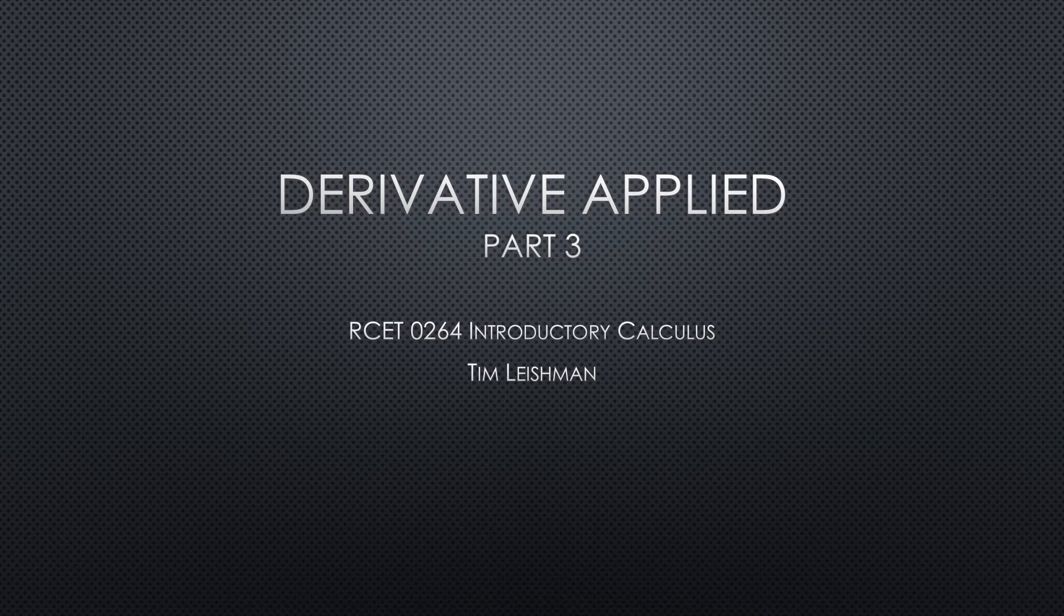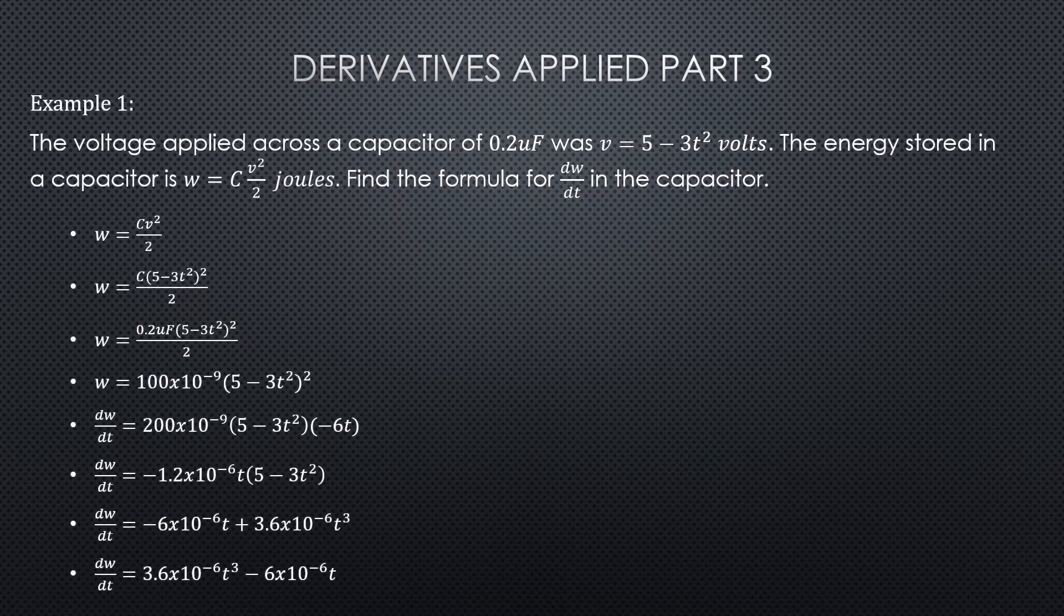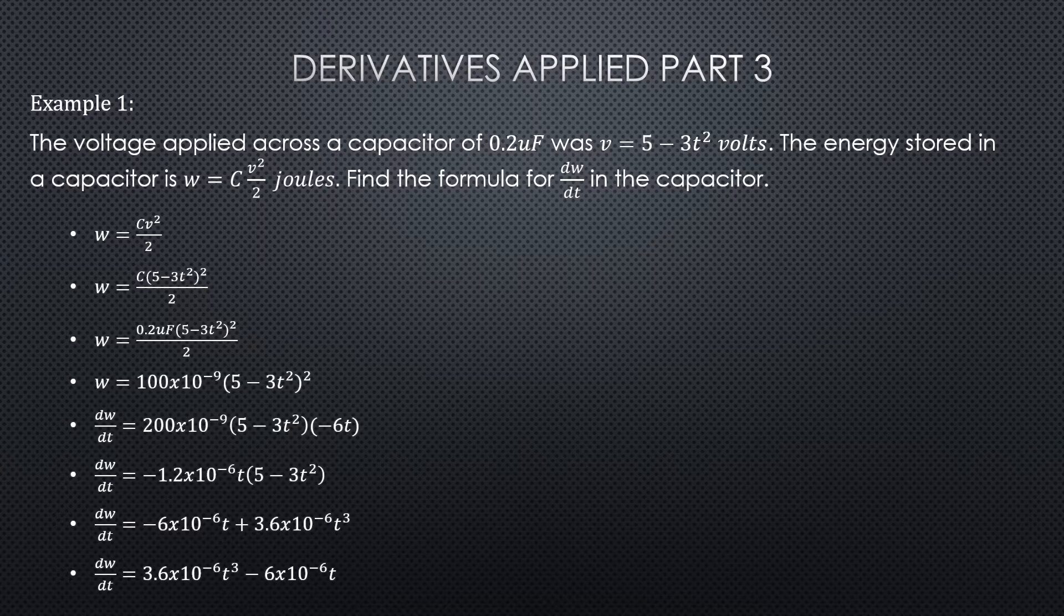Welcome to Derivatives Applied Part 3. Alright, here's our problem. The voltage applied across a capacitor of 0.2 microfarads was V equals 5 minus 3t² volts.